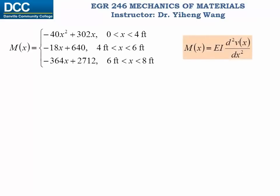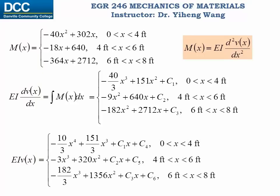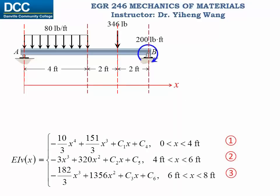The internal bending moment function equals EI times the second derivative of the deflection function. Integrating the bending moment function once and then again gives EI times v(x), the deflection function. Because it is a piecewise function with three pieces, we must add three constants after the first integration and three more after the second, yielding six constants C1 through C6 total.